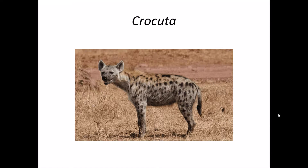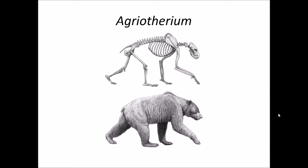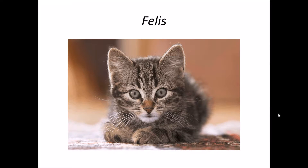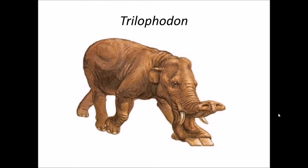Crocuta, that is hyena, belongs to the order Carnivora and is recovered from the upper Shivalik. Agriotherium were Pleistocene bears of large size, also belonging to the order Carnivora. Felis, that is cat, also belongs to the order Carnivora, and fossils of Felis are also recovered from the upper Shivalik.